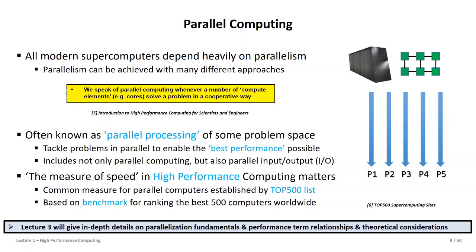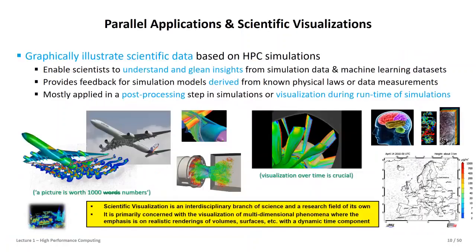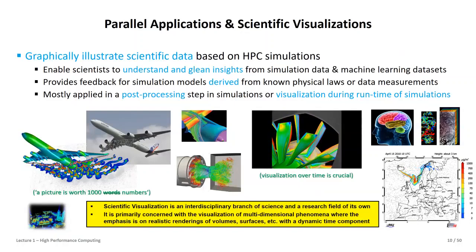The question remains how we measure this — how do we know we have a high performance computing system? There are common benchmarks in the Top 500 list, which ranks the top 500 supercomputers in the world. Different tools called benchmarks not only give you this ranking with precise numbers about where your computer belongs in the Top 500, but there are also different application-based benchmarks. We will look at this more in lecture three, where we review parallelization fundamentals and performance with some theory.